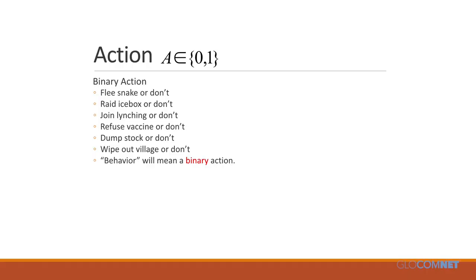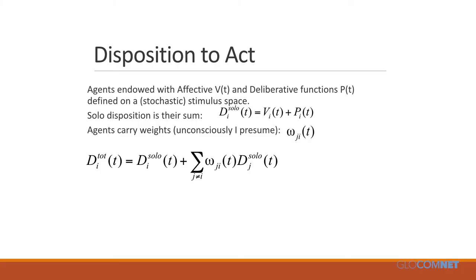This is the kind of behavior we're interested in. There's a binary action: flee the snake or don't, raid the icebox or don't, join the lynching or don't. Agents are endowed with affective and deliberative modules — V(t) and P(t). P(t) is the probability on relative frequency grounds; V(t) is the level of associative fear learning. Agents carry weights that are functions of time, and a person's total disposition is their solo disposition plus the dynamic weighted sum of the solo dispositions of others.